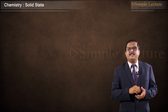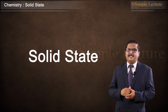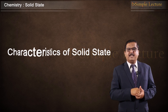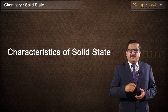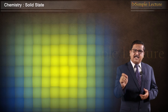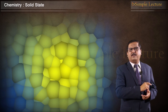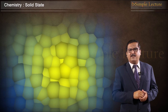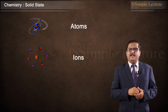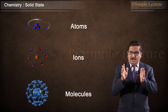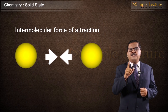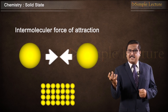In this chapter, let us study the solid state in detail. Coming to the characteristic properties of solid state — solids have characteristic properties, and all these properties are because of the strong intermolecular force of attraction between the constituent particles such as atoms, ions, and molecules. Because of this strong force, the constituent particles are in a fixed position.